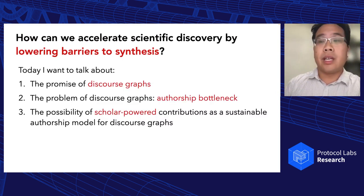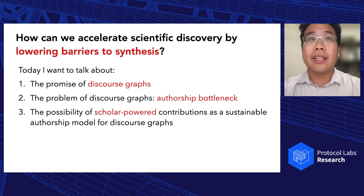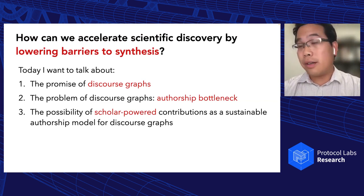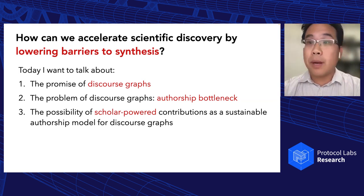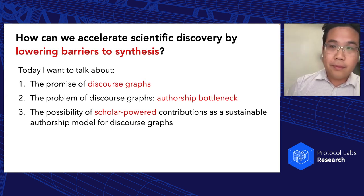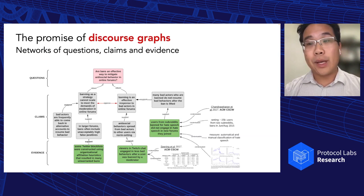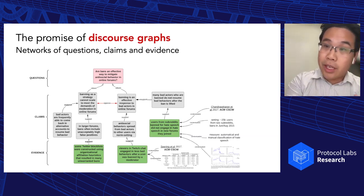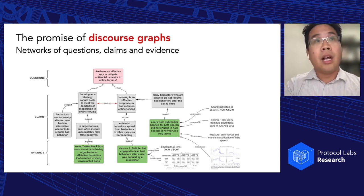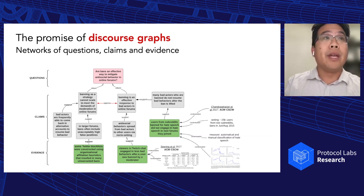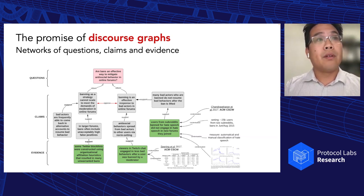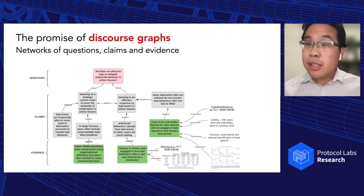Today I want to talk about discourse graphs — what are they, why do we think they're interesting, and why don't we have them yet. This is a core idea about the authorship bottleneck. Something like a discourse graph is actually what we're trying to construct. We have a question — are bans an effective way to mitigate anti-social behavior in online forums — and we have claims as answers to that question, such as 'banning as a strategy is effective' or 'banning strategy cannot scale.'